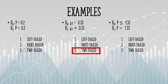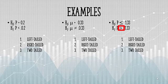In this statement, the alternate hypothesis has a greater than symbol, so that would be a right-tailed test.